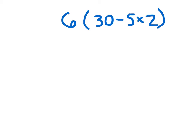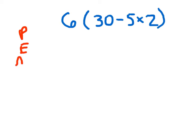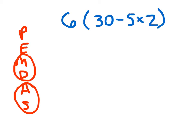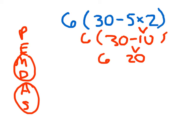Here's another one for you to try. Go ahead and hit pause. Do you remember your order of operations? Did you remember to do your multiplication first? So we clear our parentheses: 5 times 2 is 10, and 30 minus 10 is 20. Then we have 6 of all of this, which is 6 times 20, which is 120.